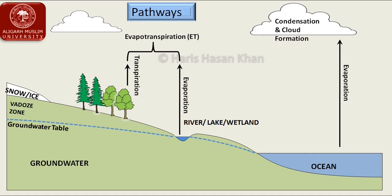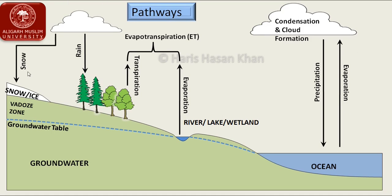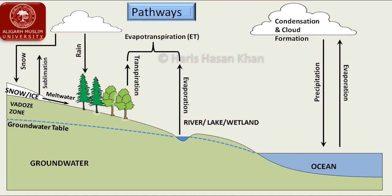Transpiration from plants, combined with evaporation, constitutes evapotranspiration. Water vapor in the atmosphere then condenses, cloud formation takes place, and precipitation occurs over both oceans and continental surfaces. The most common forms of precipitation are rainfall and snowfall. Snow accumulates as seasonal snow, snowpacks, and if it continues to accumulate over years, it leads to the formation of glaciers. Water from snow and ice is lost by sublimation and by melting.